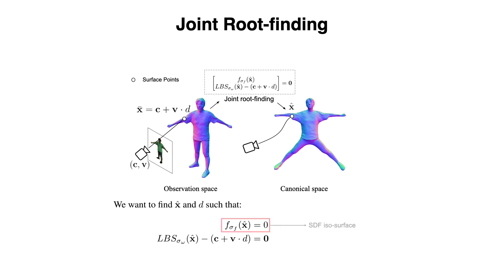The SDF isosurface condition states that the canonical point should be on the isosurface, while the LBS condition states that after applying forward LBS to the canonical point, the transformed point should lie on the specified camera array.